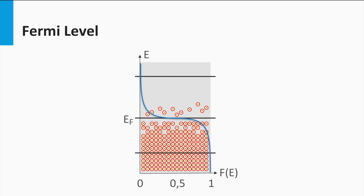For higher temperatures this distribution starts to broaden around the Fermi level, and around the Fermi level the probability is distributed over values between 0 and 1. The higher the temperature, the broader the distribution around the Fermi level will be.